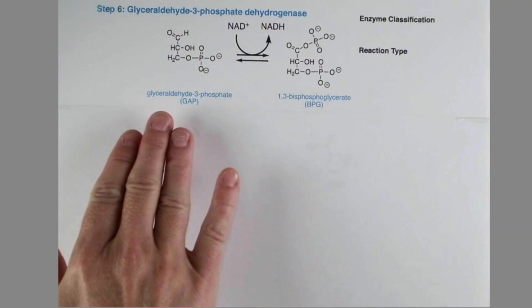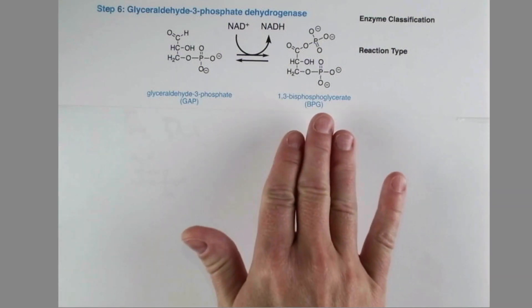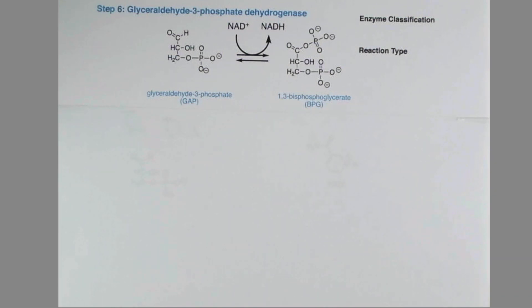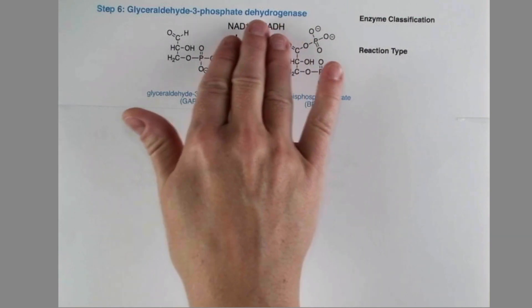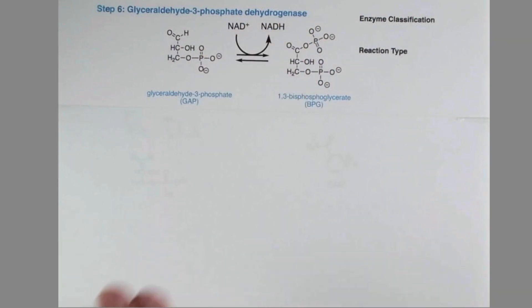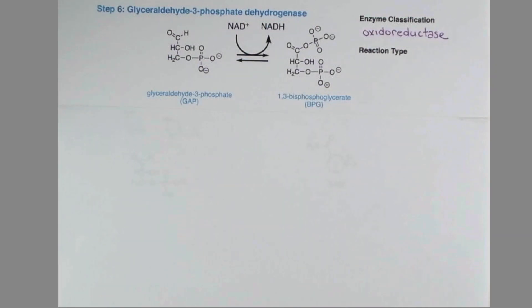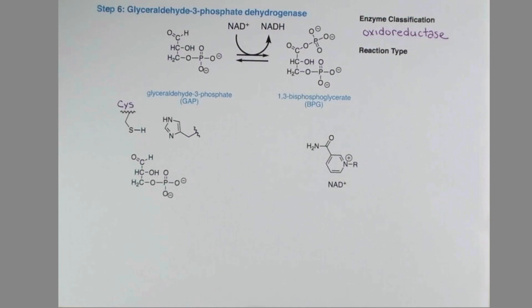In the sixth step of glycolysis, glyceraldehyde-3-phosphate is converted to 1,3-bisphosphoglycerate. The enzyme that catalyzes this reaction is glyceraldehyde-3-phosphate dehydrogenase, and that name, along with the fact that the coenzyme NAD+ is involved, lets us know that this enzyme is an oxidoreductase. We're going to see some redox chemistry. An active site cysteine and a histidine are our catalytic residues.